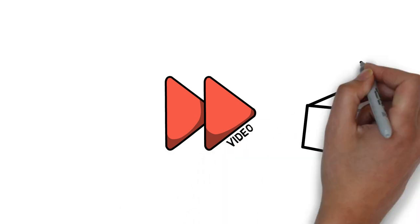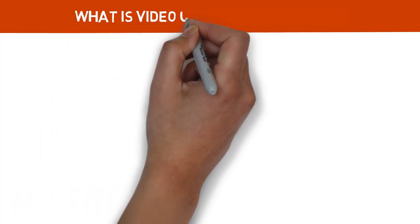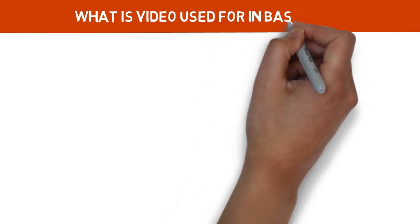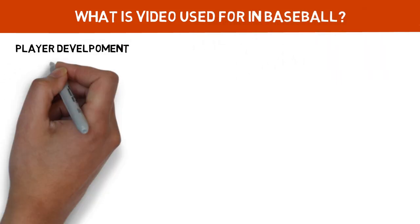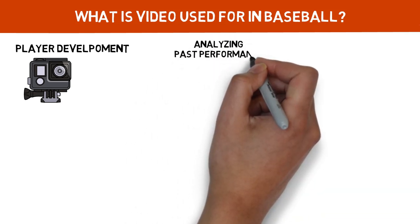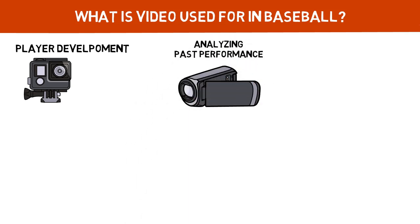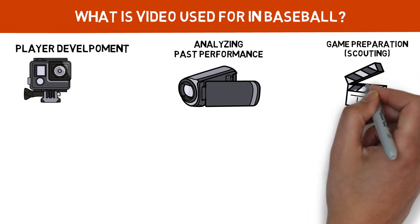We're now going to really jump into what today's video is going to be about, and that's video. To begin with, what is video typically used for in baseball? It serves three main roles, at least in collegiate and professional baseball. The first is for player development, the second is for helping coaches and players analyze past performance, and the third is for game preparation, aka scouting.